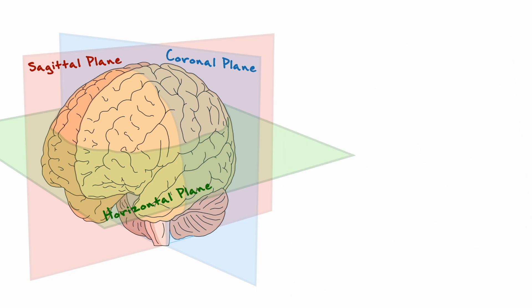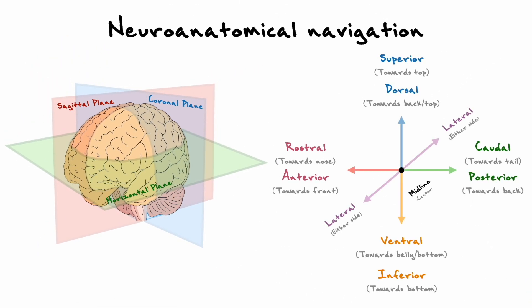In summary, the key aspects to understand how to properly navigate the central nervous system are the 3 axes for the brain and spinal cord, as well as the 3 planes that generally divide the brain.